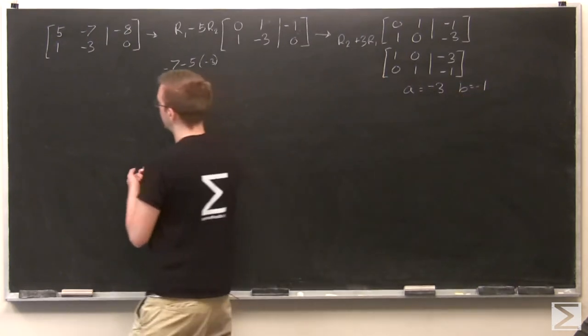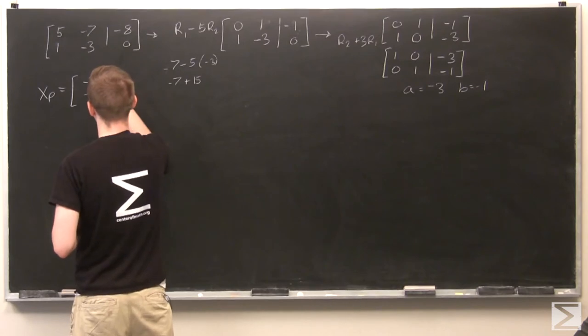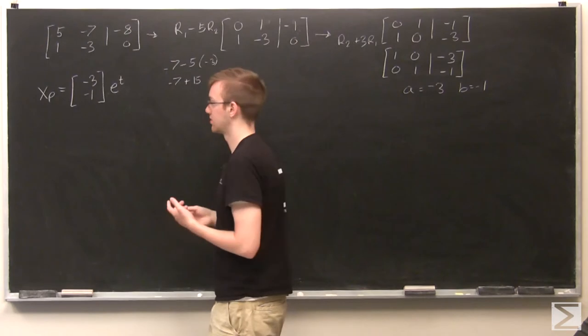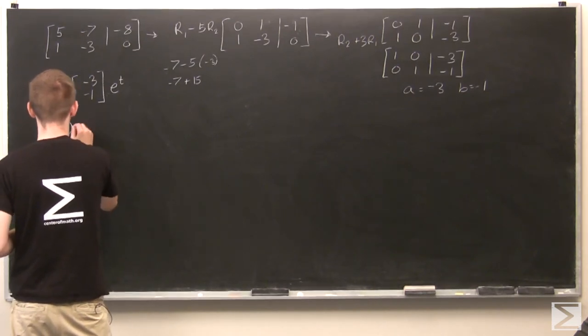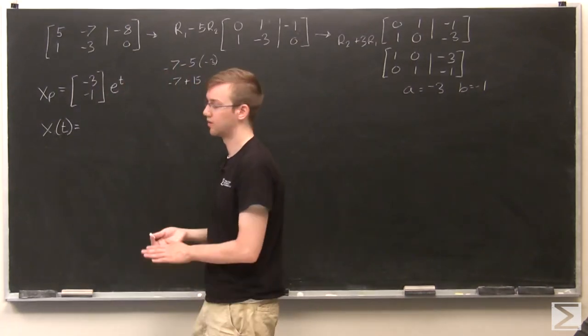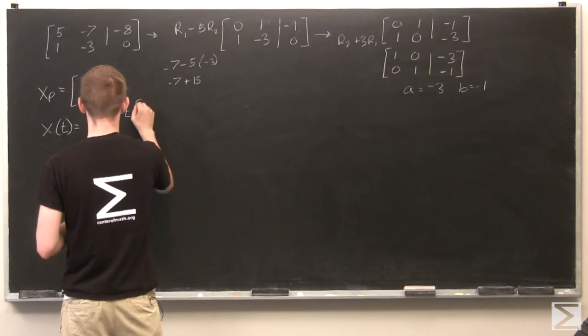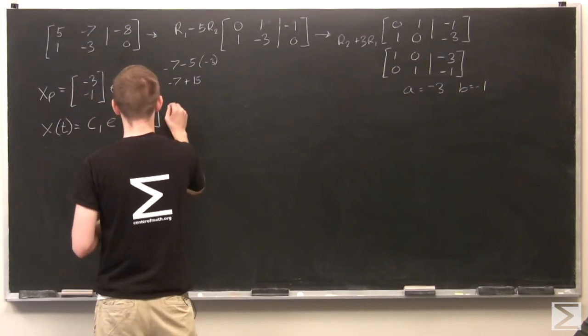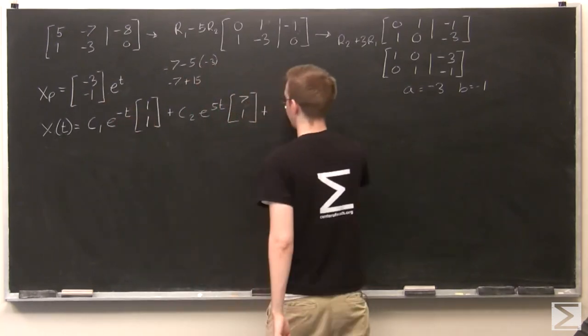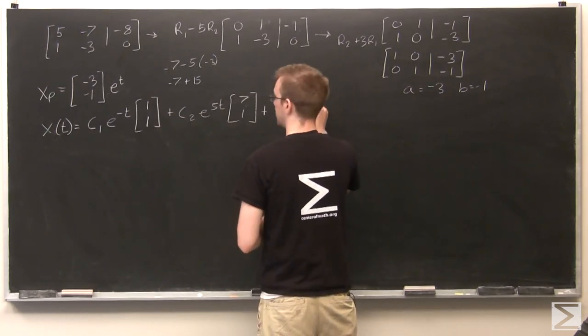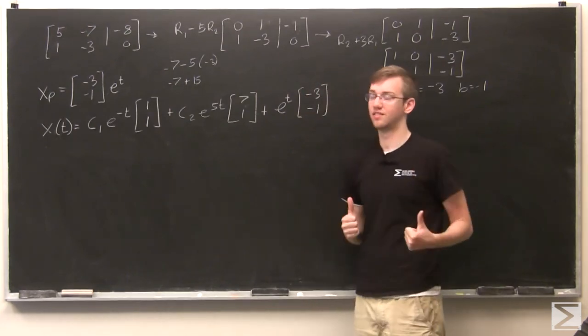So if you remember, our particular solution xp, we had a and b, so it's going to be [-3, -1]*e^t. And this gives us the general form. x(t), we just need xh plus xp. That was C1*e^(-t) times [1, 1], plus C2*e^(5t) times [7, 1], plus this we just got: e^t times [-3, -1]. That's my general solution.